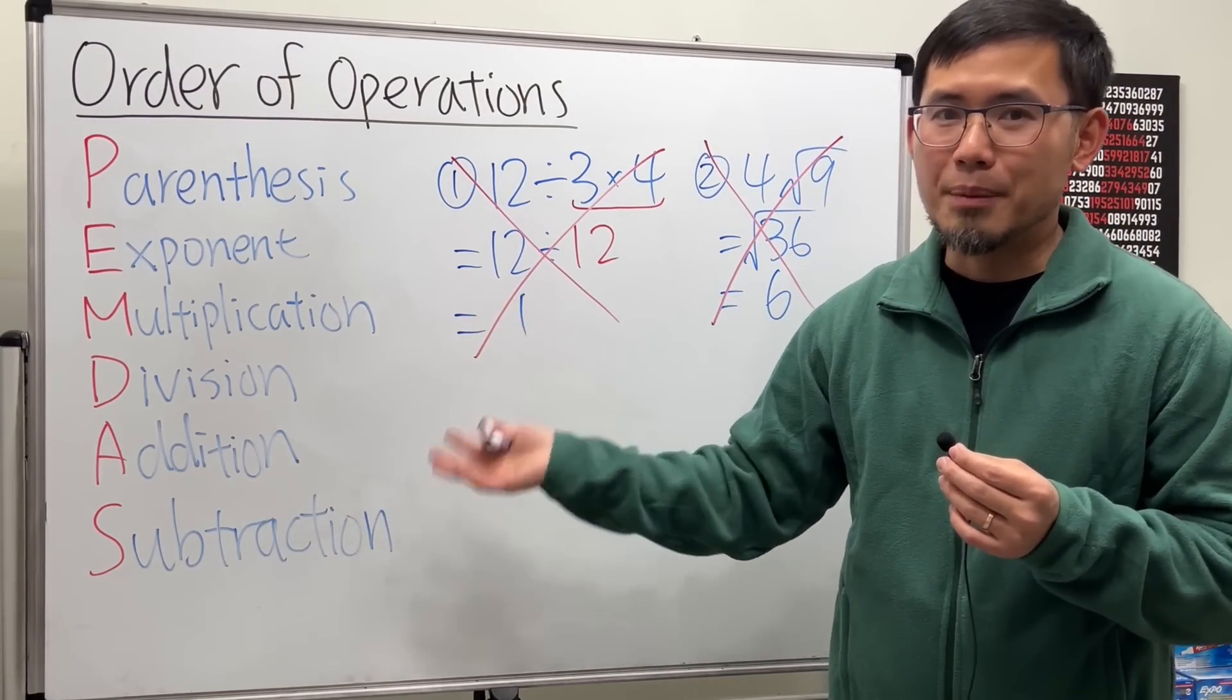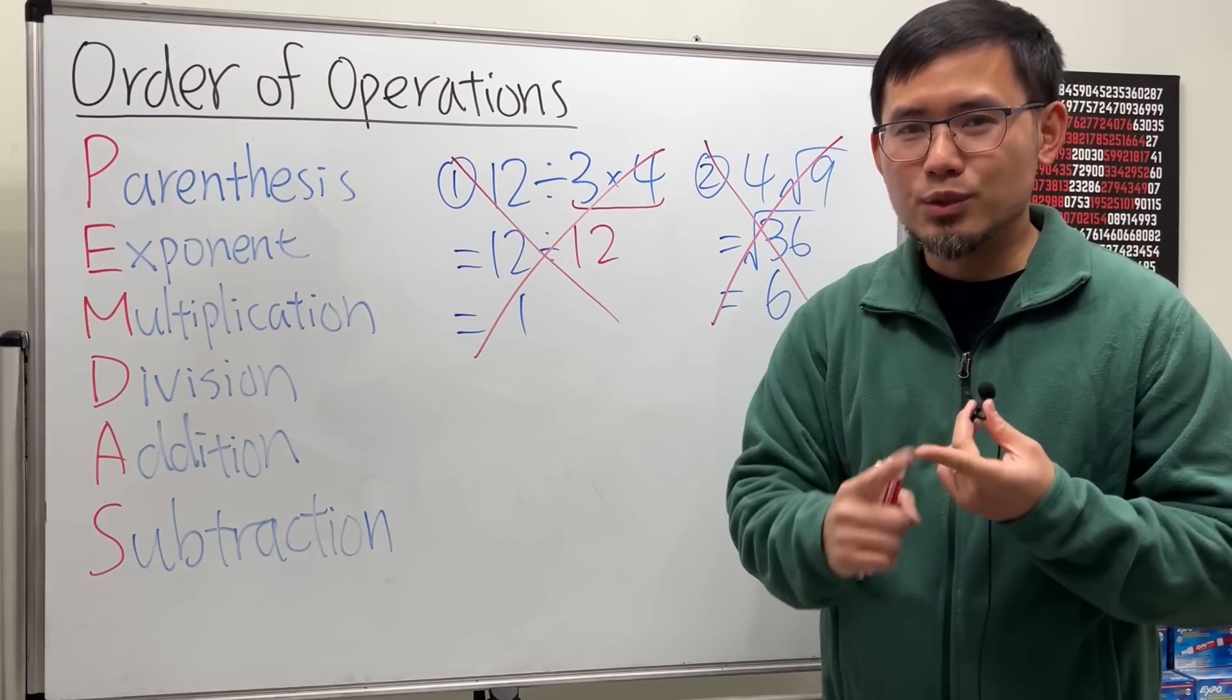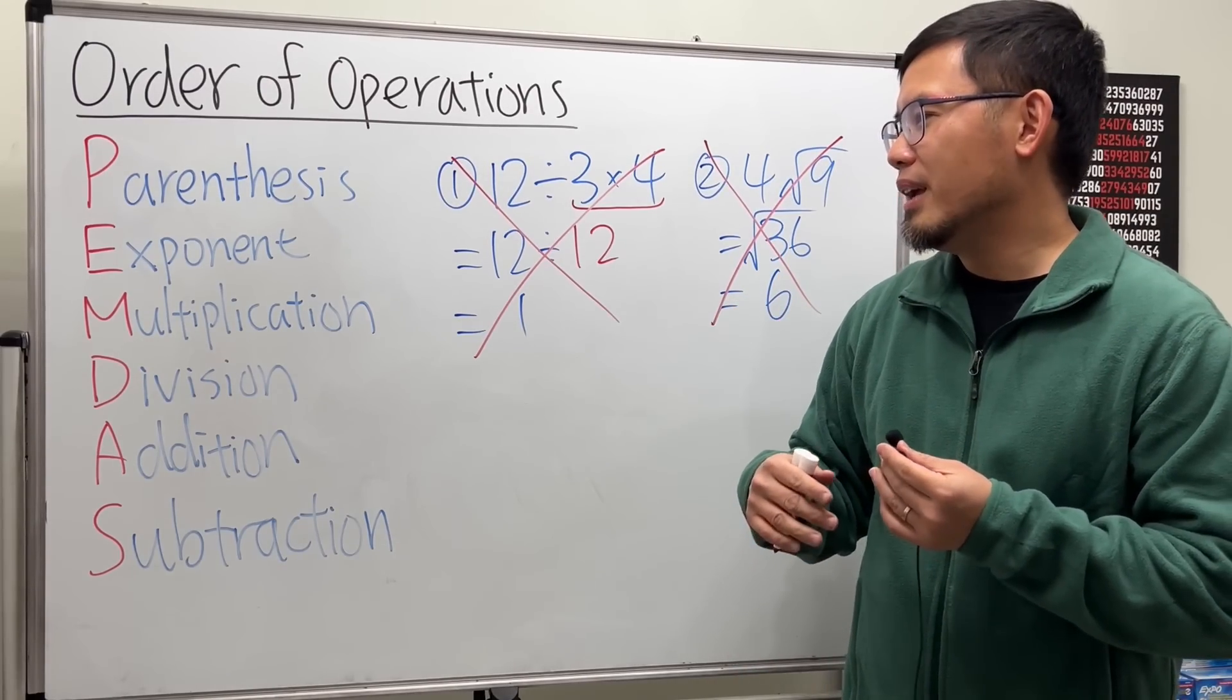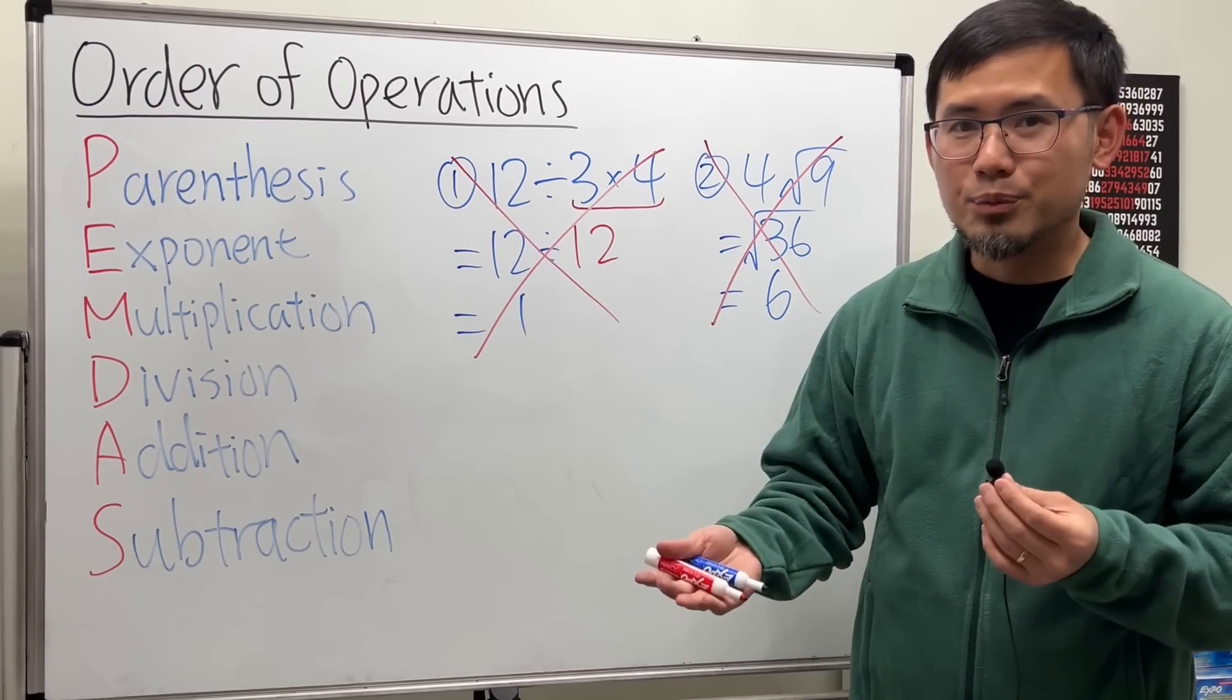Which is the second problem with PEMDAS. Where are the other operations? We have the square root, absolute value, and later on you also see the logarithm functions. A lot more, right?